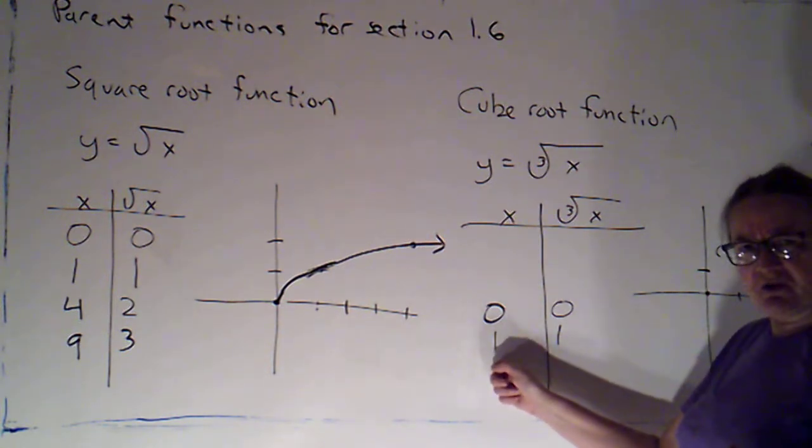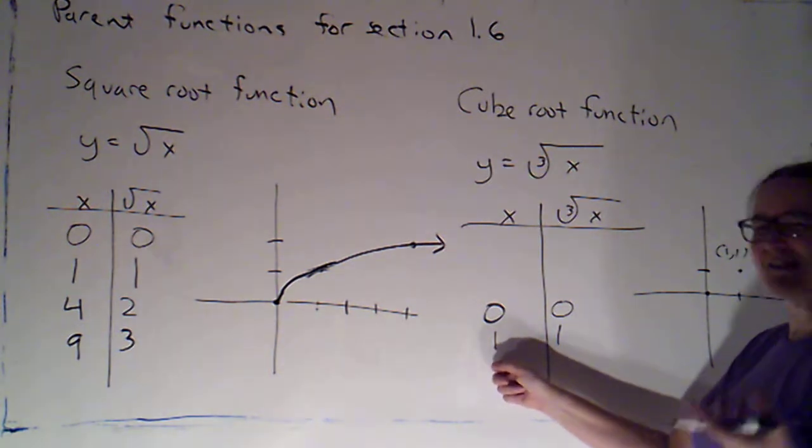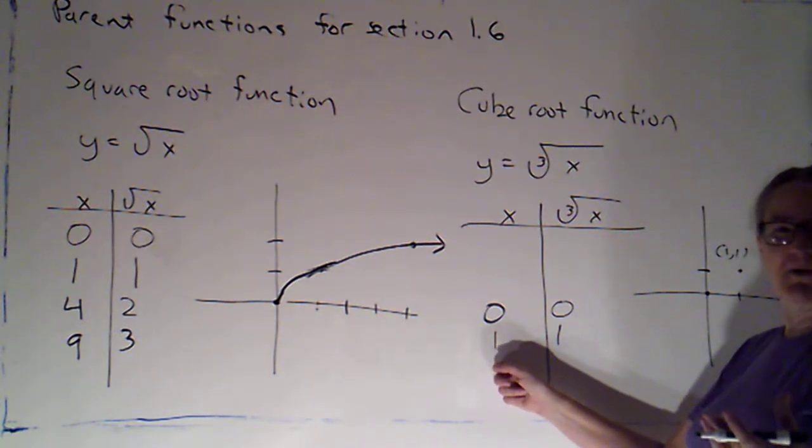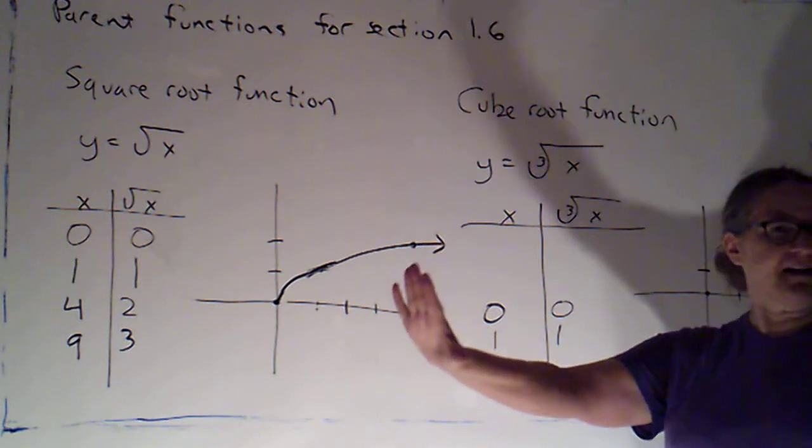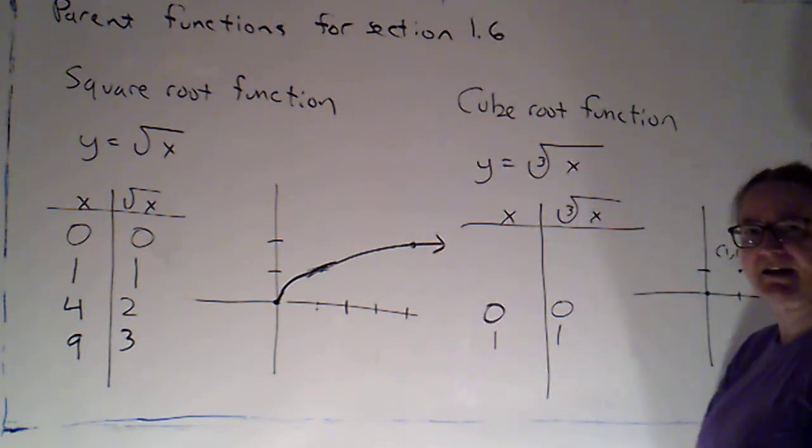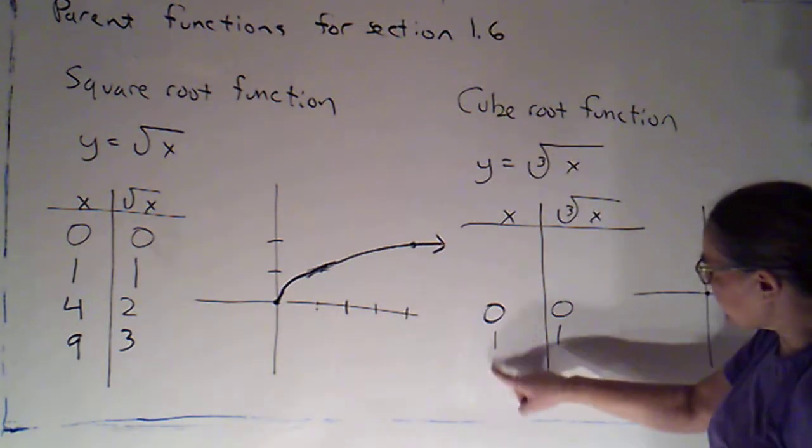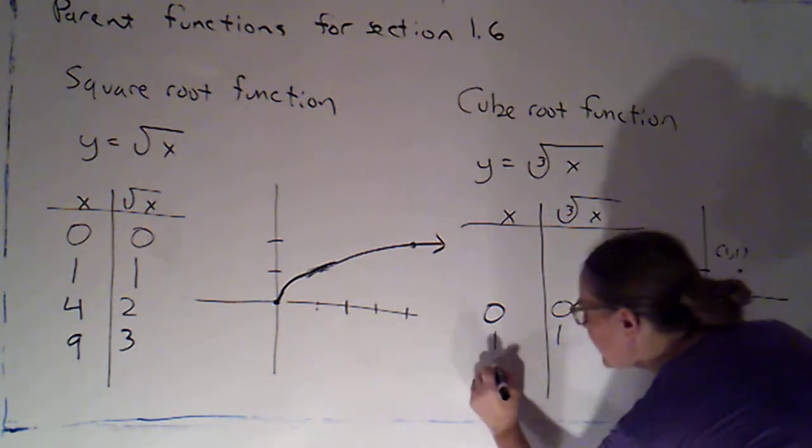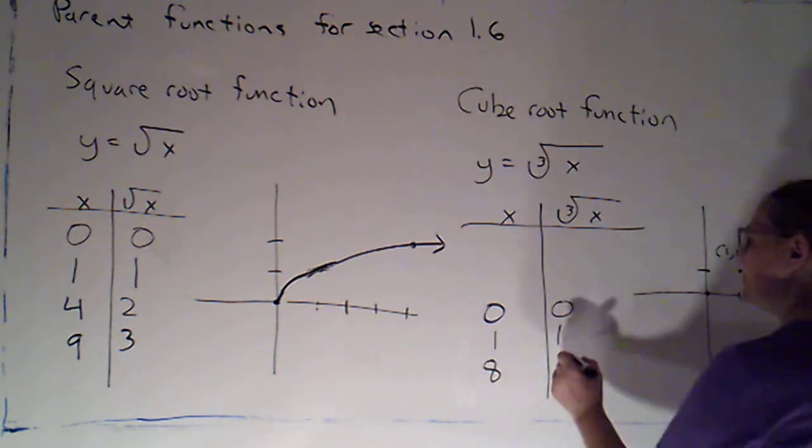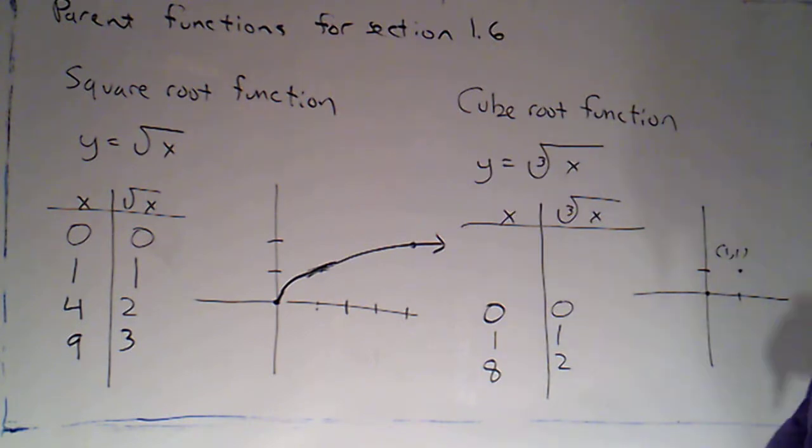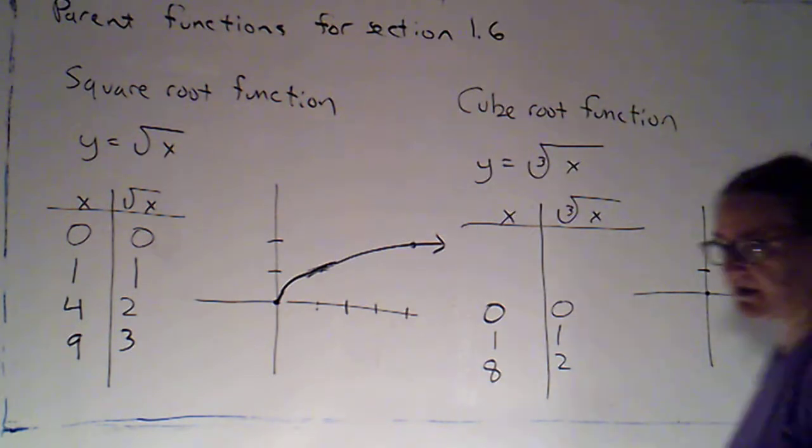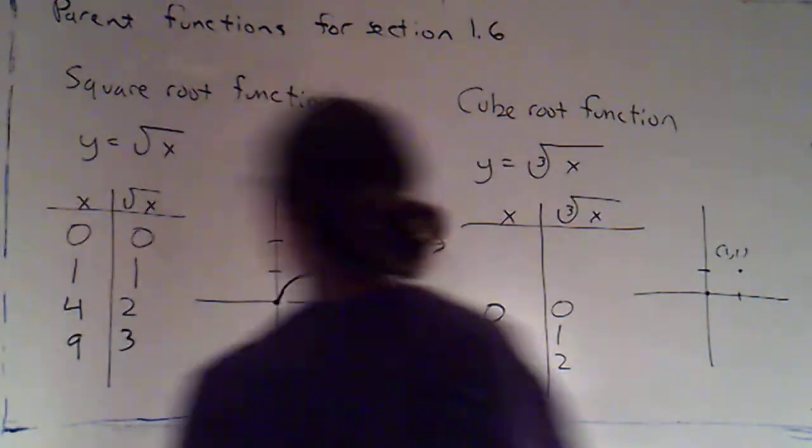Cube root of 2 is an irrational number. It doesn't work out nicely. The decimal expression of that just goes on forever and ever and ever without repeating a pattern. So I want to go to the next perfect cube, which would actually be 8. 8 is 2 cubed, so the cube root of 8 will be 2.